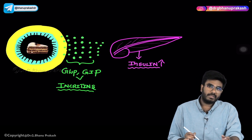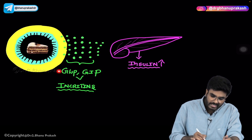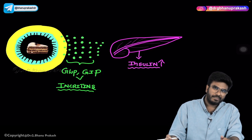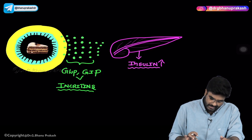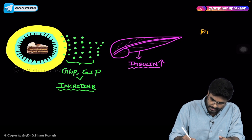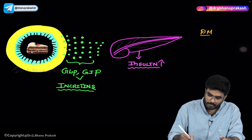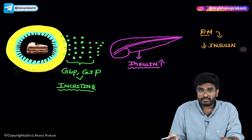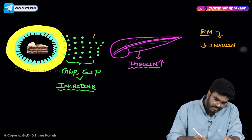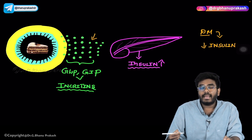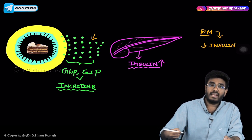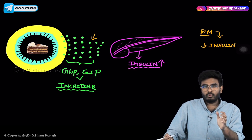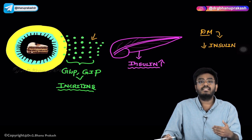How do we use these GI hormones to treat diabetes mellitus? In diabetes mellitus, the problem is decreased insulin. We know one way to increase insulin release: if you use incretin analogues — drugs like GLP and GIP — those drugs can also act on the pancreas and increase the release of insulin, causing blood glucose levels to go down in diabetes mellitus.